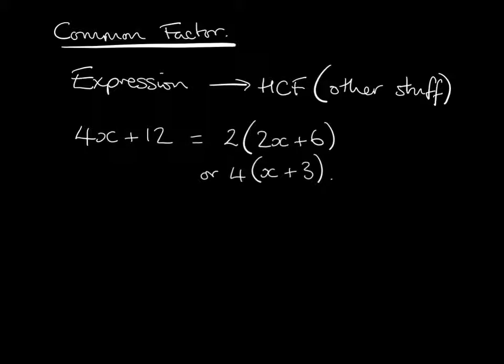What we've basically done here is removed or divided by the number that goes into 4 and 12. Now one option is 2, because 2 goes into 4 twice. That's why we've got 2x. 2 times 2x gives us 4x here. Likewise, 2 times 6 gives us 12 here. So 2 lots of this bracket, 2x plus 6, gives us what we started with, 4x plus 12.